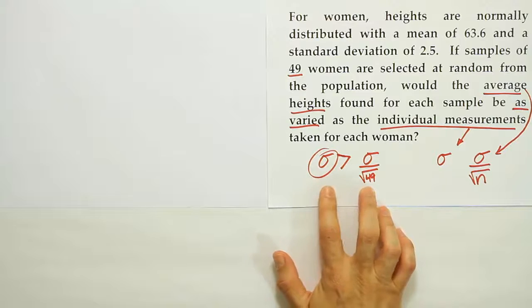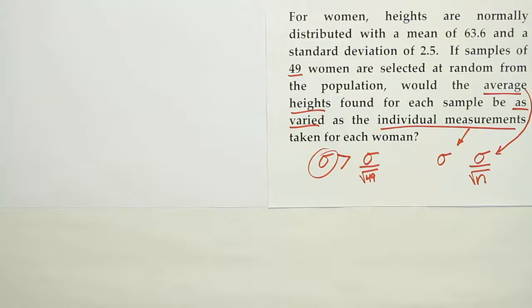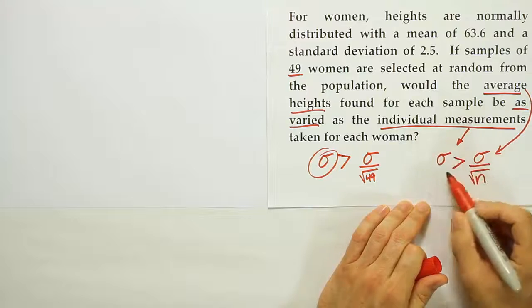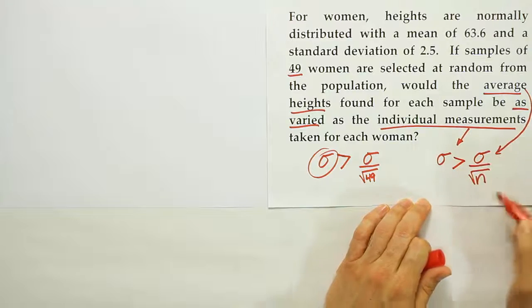And this relationship, this formula, expresses that clearly. So keep in mind, again, as long as n is greater than one, sigma is always greater than sigma divided by the square root of n.